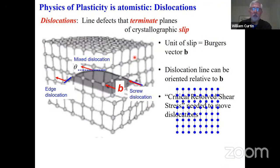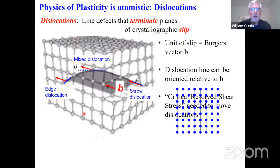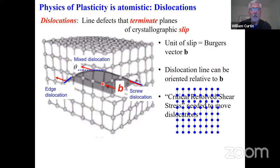The physics of plasticity is atomistic—it is about dislocations. What is a dislocation? It's a line defect that terminates planes of slip. In a crystal, if the top part of the material slips relative to the bottom by the Burgers vector—a displacement that reproduces the perfect lattice—you don't see the slip. But at some point the slipping stops, and there's a boundary between the slipped region and the unslipped region. That curved boundary line is a dislocation line.